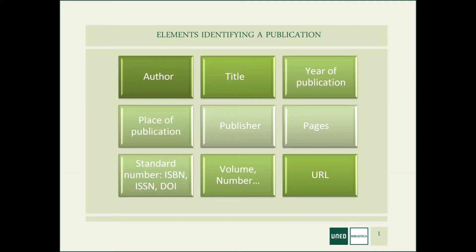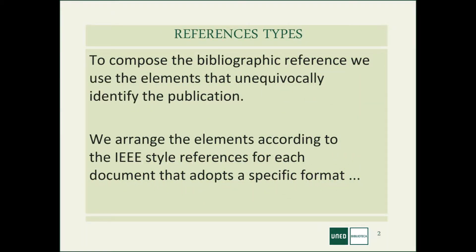First, we must take into account the different elements that identify a publication, such as the author, the title, ISBN, DOI, or the URL where the online document we want to refer to is located. Making the bibliographic reference is as simple as locating these elements. Here we will see the IEEE style of the Institute of Electrical and Electronic Engineering.